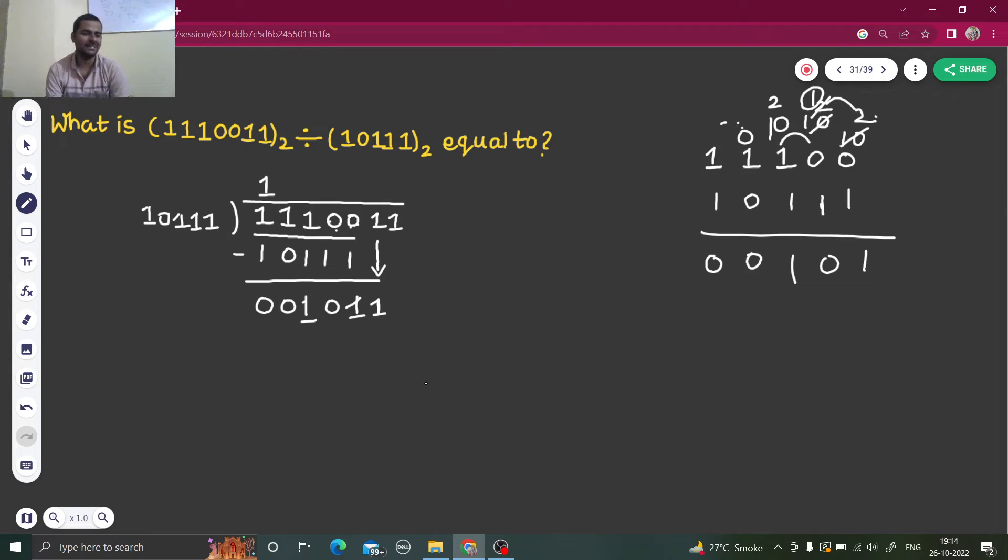Now compare again. One, zero, one, one, one is smaller than one, zero, one, one, one. So I need an extra digit for that, bring one, zero. So that zero can be written like this. So I am left with one, zero, one, one, one, one, one, and now I can take this one also down.